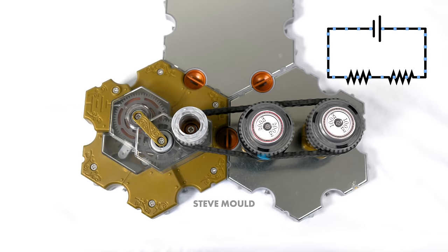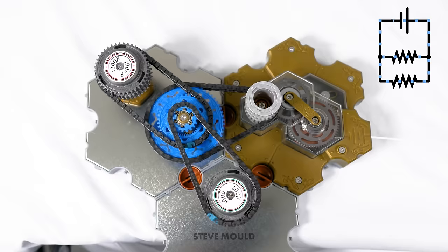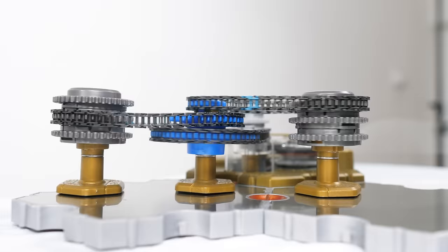So remember when I had these two resistors in series, they span at the same rate, just like an electric circuit, the current through two resistors in series will be the same. But look, when I put them in parallel, the smaller resistor spins much more quickly. And that's as we would expect. We expect a greater current to flow through the lower resistor.